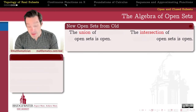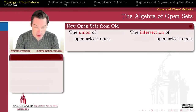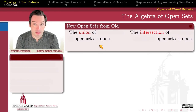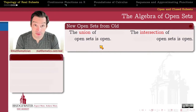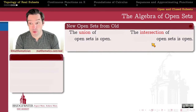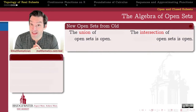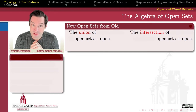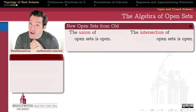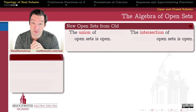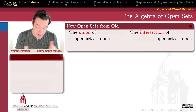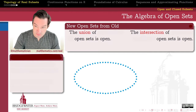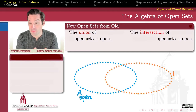Our goal here is to figure out how we can say that the union of open sets is open, or the intersection of open sets is open. Those statements are not sufficiently qualified yet. We want to figure out under what circumstances we can expect this to be true.